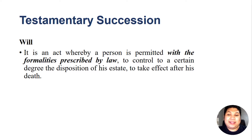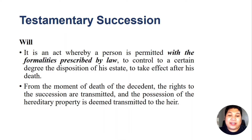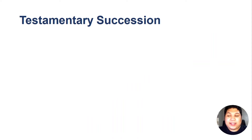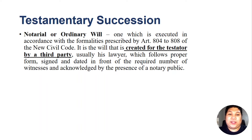A will is an act whereby a person is permitted, with the formalities prescribed by law, to control to a certain degree the disposition of his estate to take effect after his death. It is a formal document where the testator names persons who would inherit his properties. From the moment of death, the rights to succession are transmitted and the possession of hereditary properties is deemed transmitted to the heir. There are several kinds of will.